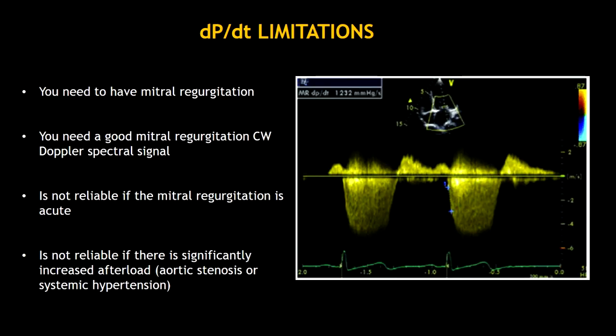Every method has its limitations. Here you can see some of the DPDT limitations. First, you need to have a mitral regurgitation — if you don't have mitral regurgitation, you cannot measure the DPDT. Second, not only do you need mitral regurgitation, but you also need a good mitral regurgitation spectral signal. Third, this measurement is not reliable if the mitral regurgitation is acute. And fourth, this measurement is also not reliable if there is significantly increased afterload, like in aortic stenosis or systemic hypertension.